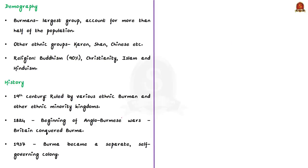Myanmar is a country of great ethnic diversity. The Burmans, who form the largest group, account for more than half of Myanmar's population. Other ethnic groups include Karen, Shan, Chinese, and others. Almost 90% of Myanmar's population follows Buddhism, and the remaining population follows religions such as Christianity, Islam, and Hinduism. This is in brief about the geography of Myanmar.